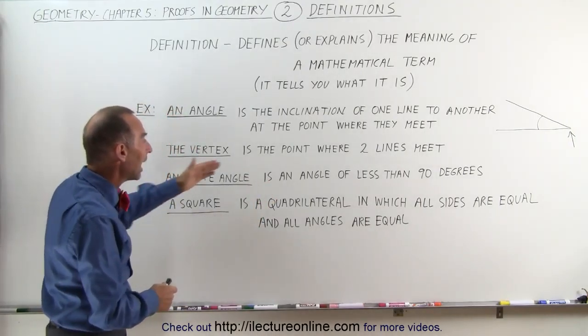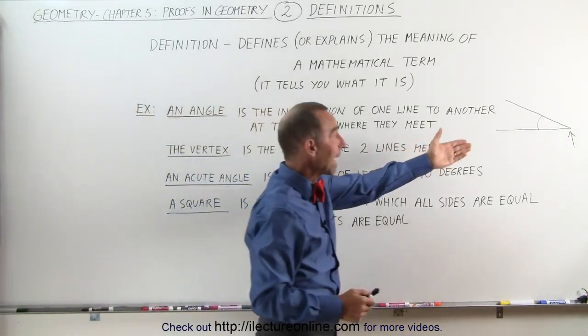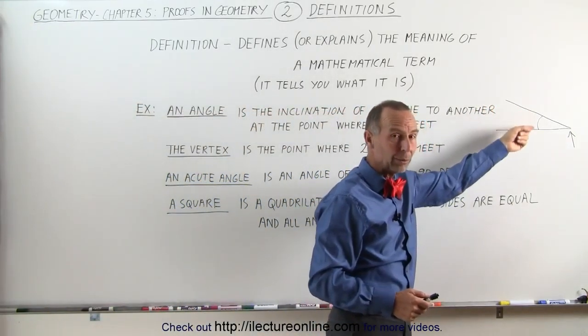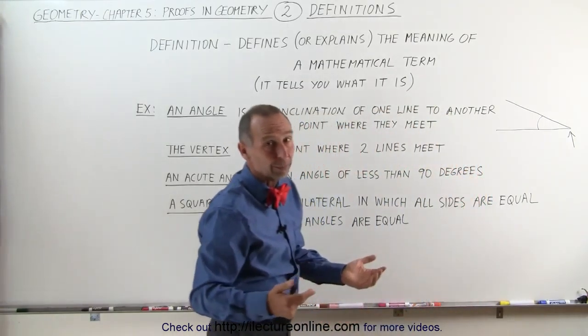An acute angle is an angle of less than 90 degrees. Here we have an example where the angle is less than 90 degrees. That would then be by definition called an acute angle. We don't need to prove it.